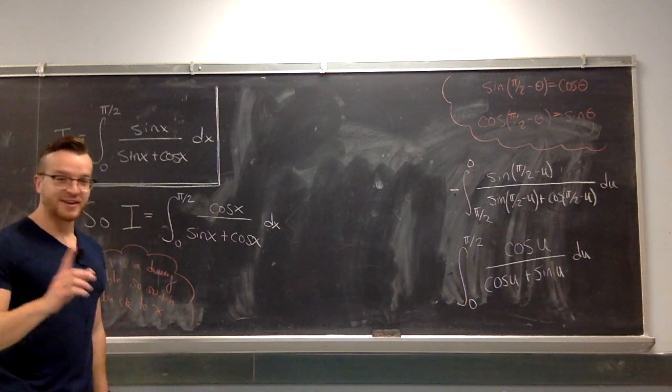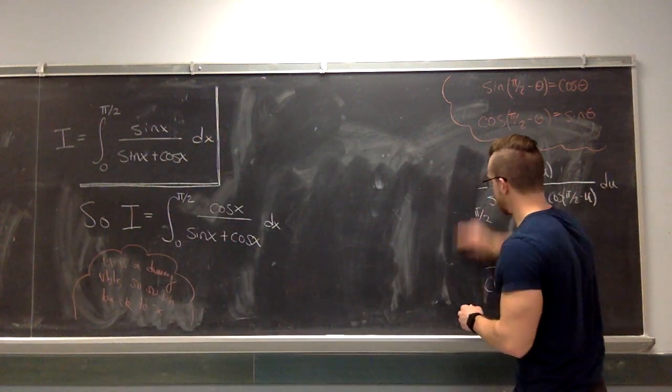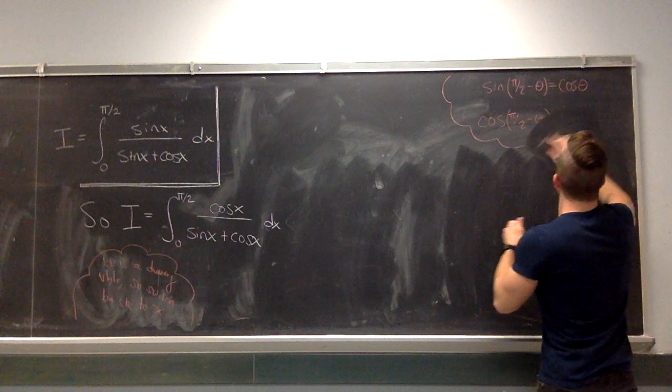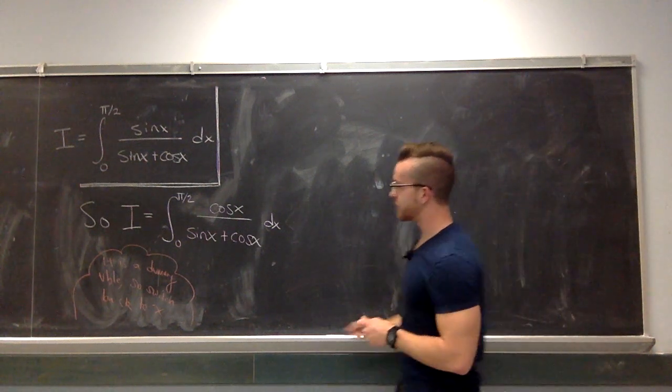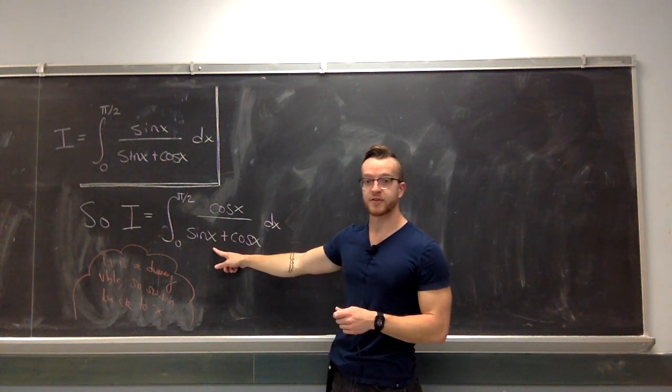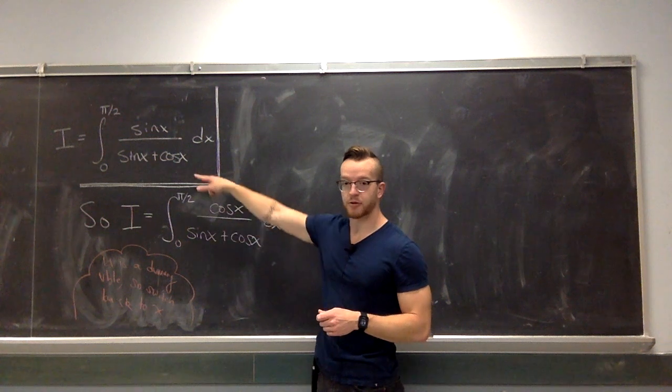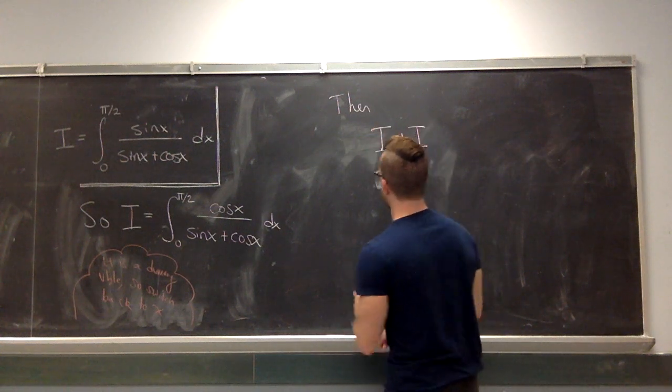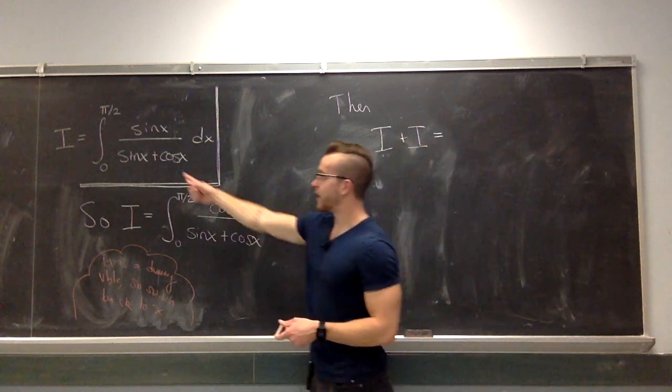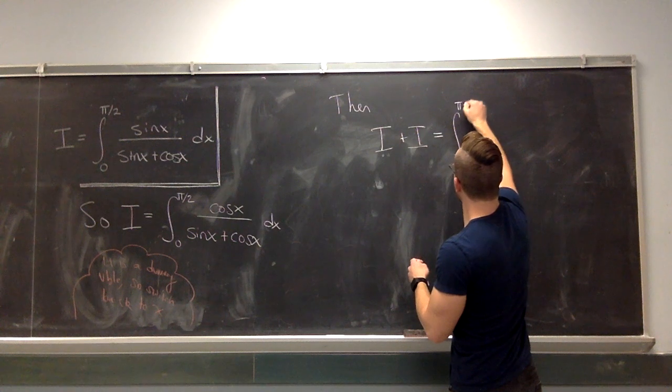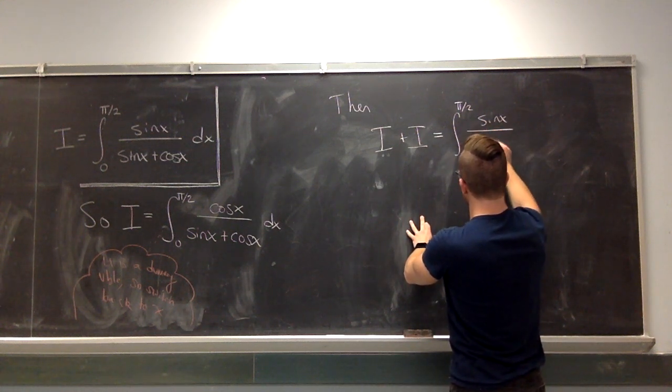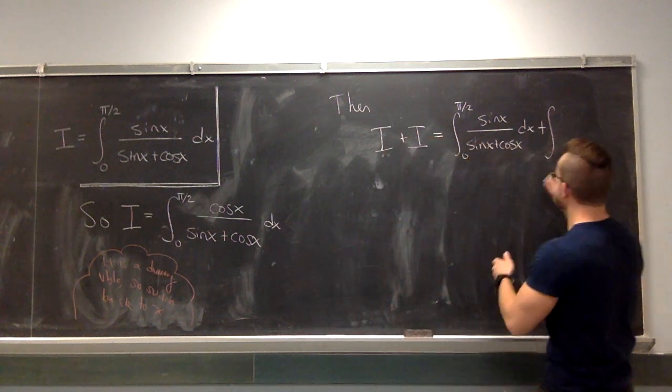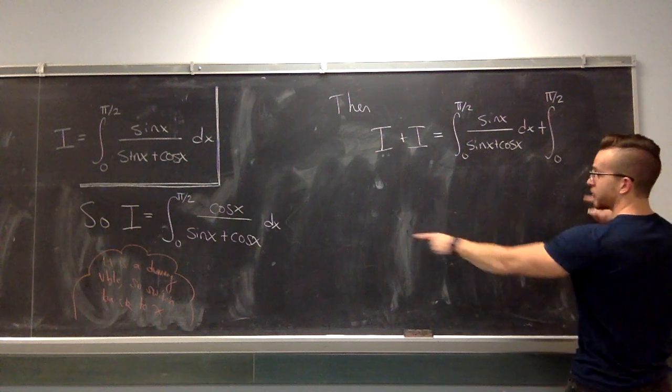Okay. What's the point? Here's what we can do. This is where it gets cute. On the one hand, I equals that in the box. That's the original integral we started with. But on the other hand, I equals this. That's what we showed by the substitution. What if I add these together? I plus I is, well, I is this. But I is also this. So I could write I plus I as this integral plus that integral.